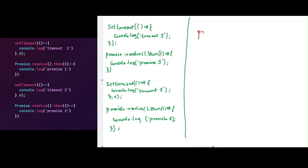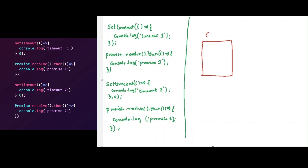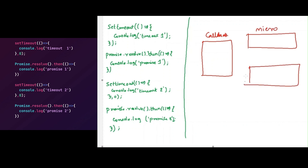The output for this question would be: promise 1, promise 2, timeout 1, and timeout 2. So this is the call stack I have explained already, this is a micro-task queue, this is a macro-task queue, and this is the event loop.